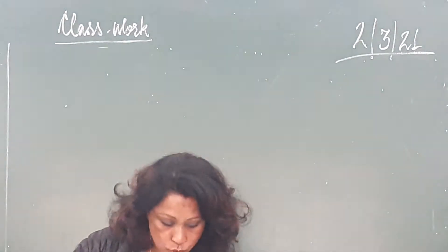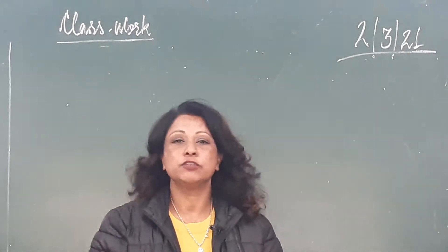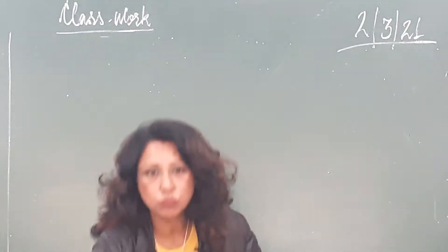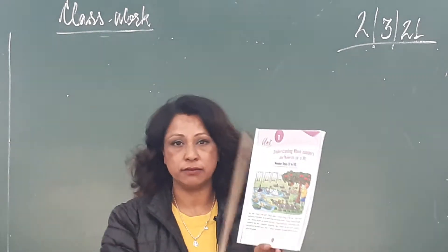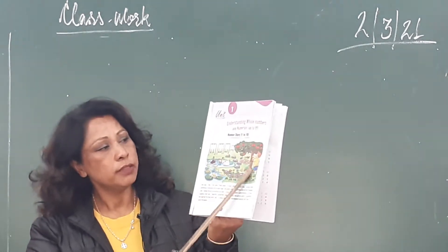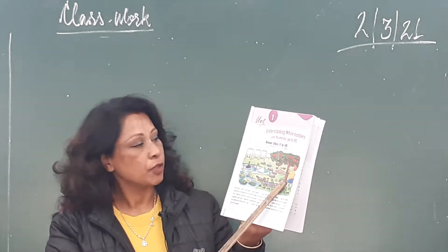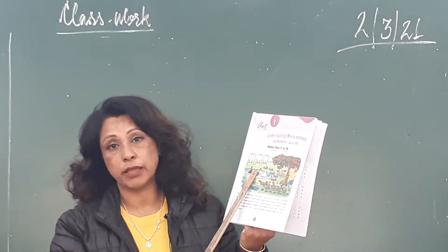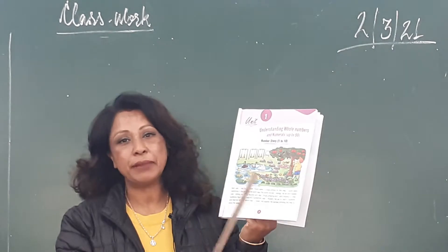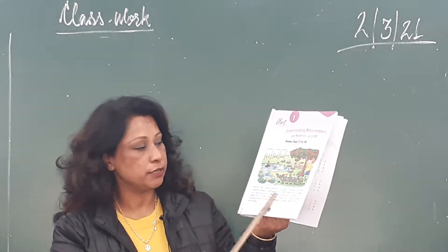Good morning children, I hope you all are fine. Now I'm going to start with the first chapter. Before I start, I want to show you something. Some pictures are here — can you see these pictures? There are different animals here, there are things here, there's a person here. You know nouns — have you done nouns in English language? All kinds of nouns are here. What is the noun? Noun is the name of a person, place, animal, and things.